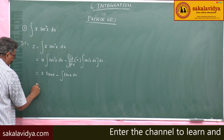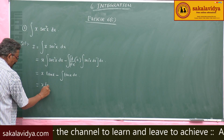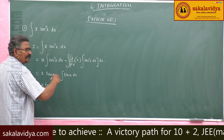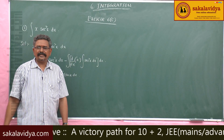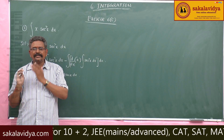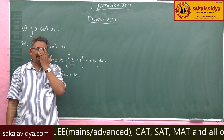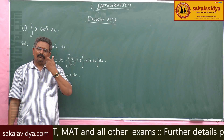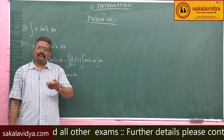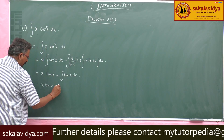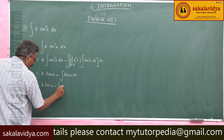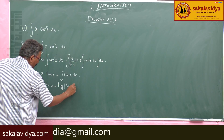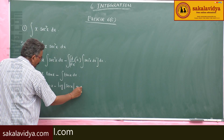So x·tan x minus ∫tan x dx. The integral of tan x dx is log|sec x|, or equivalently minus log|cos x|. Therefore the result is x·tan x plus log|sec x| plus constant of integration.